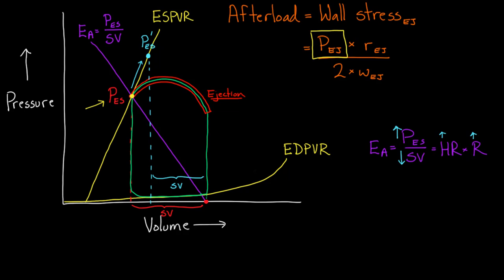To draw it out, if this is my new end-systolic pressure, I need to draw it so the crossing point on the volume axis is the same. I can extend it on the other side too. This is what would happen. One thing to point out: there is a difference between EA and afterload.